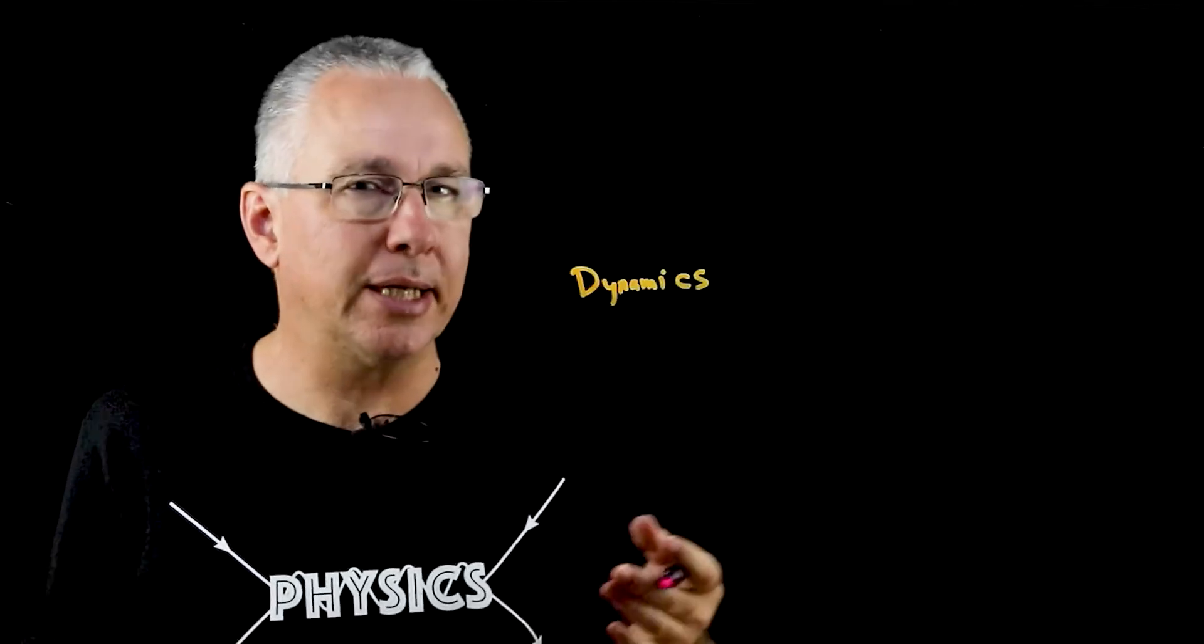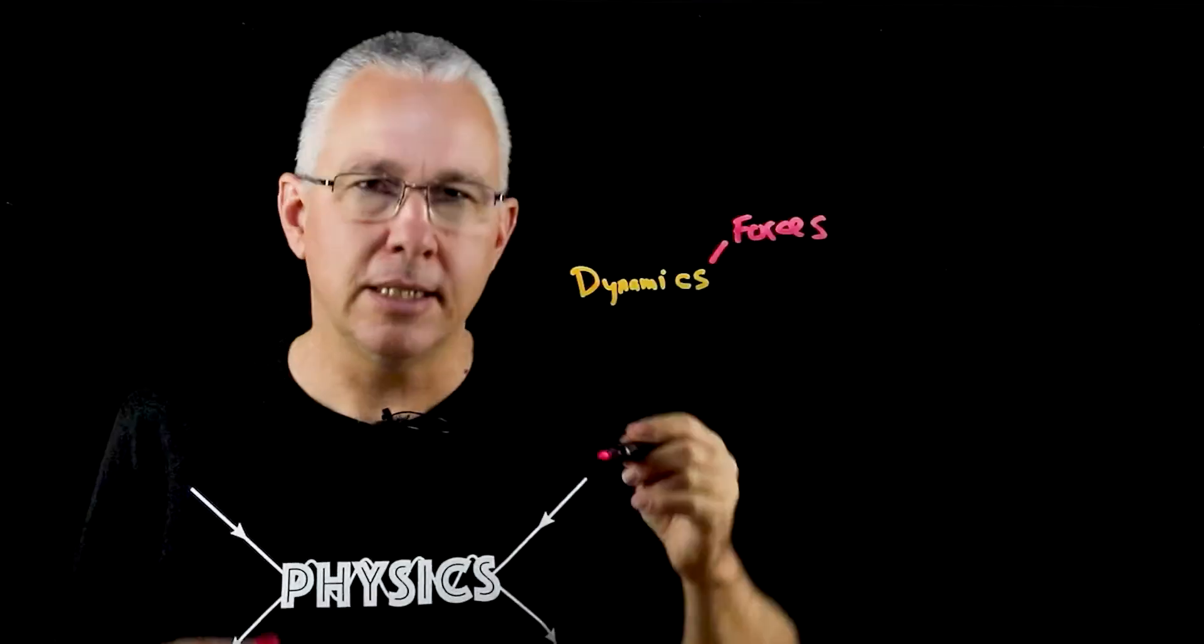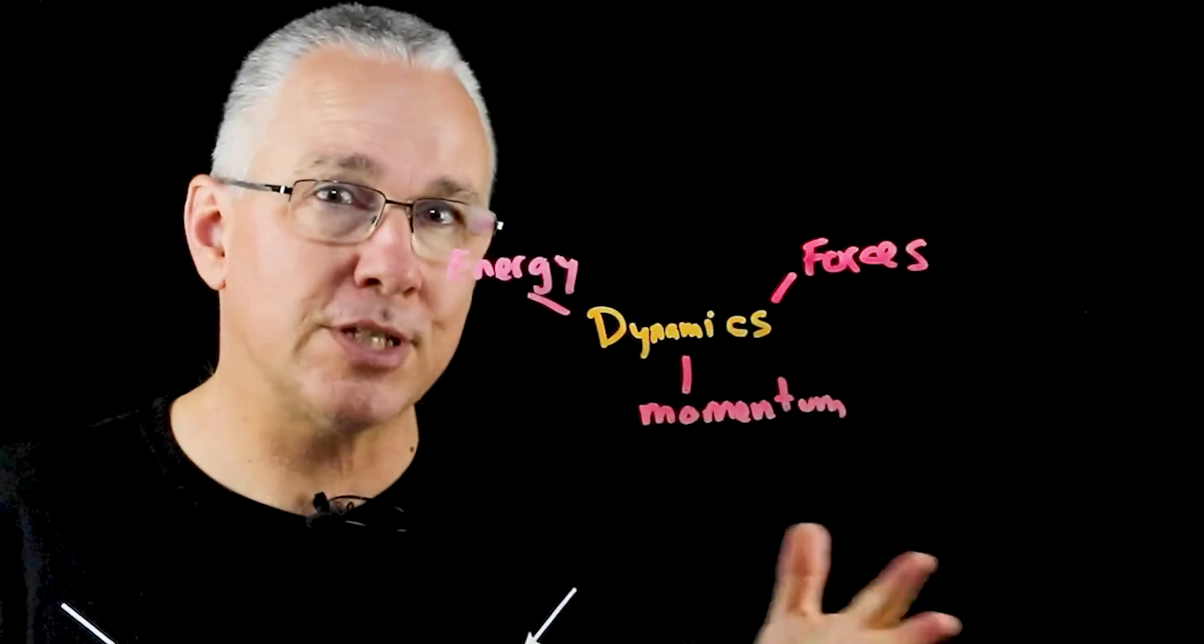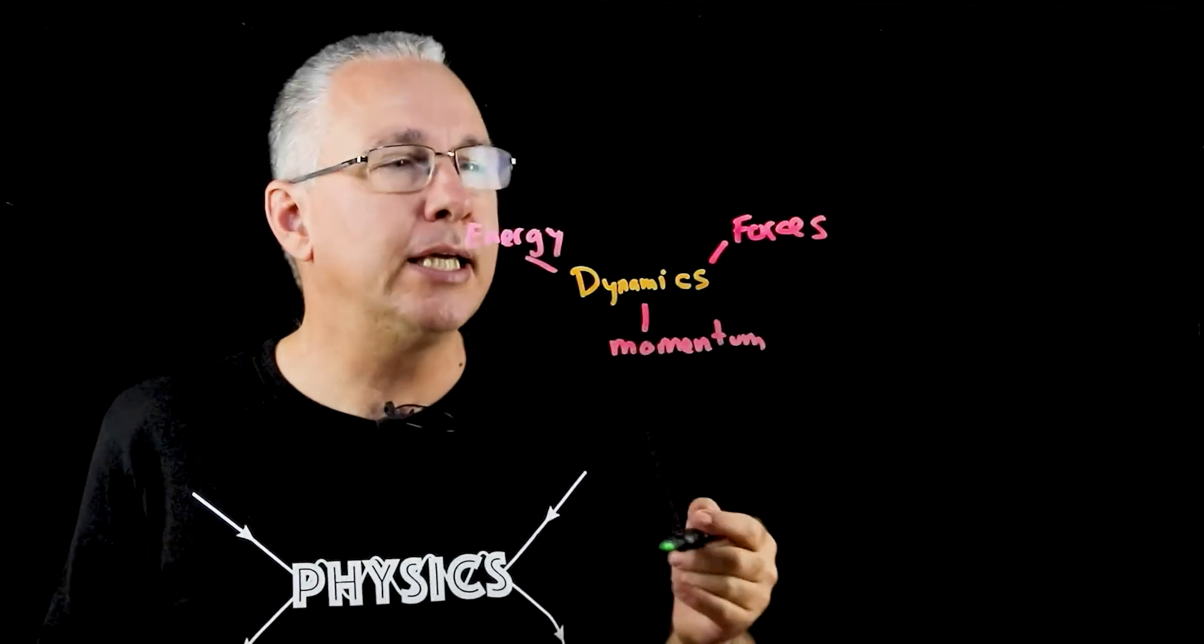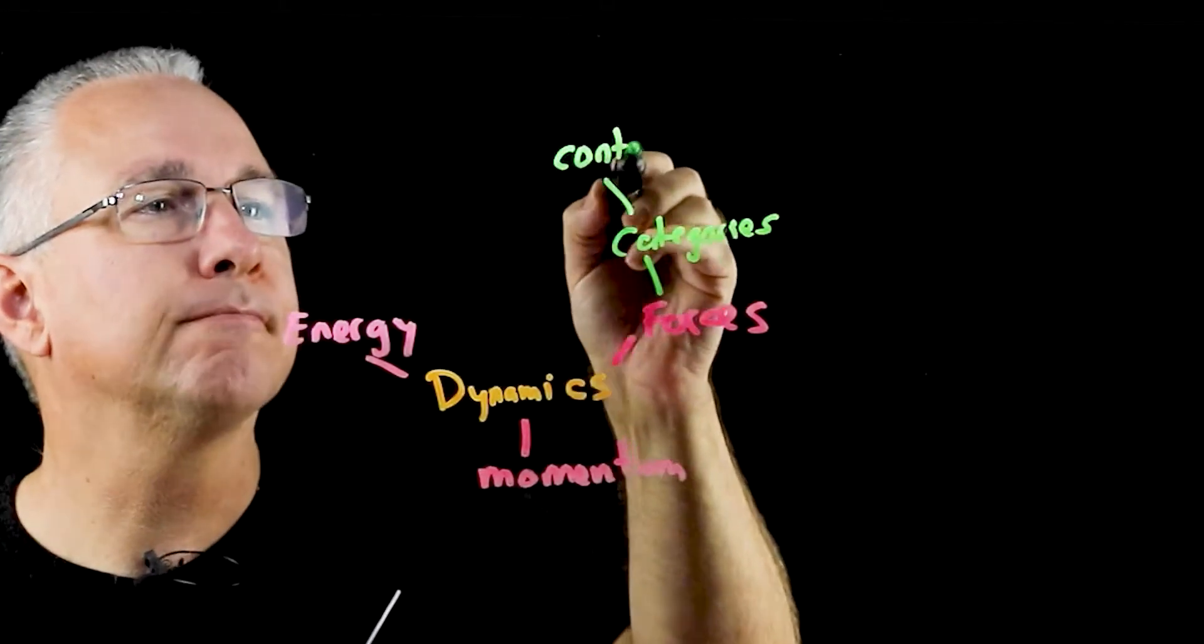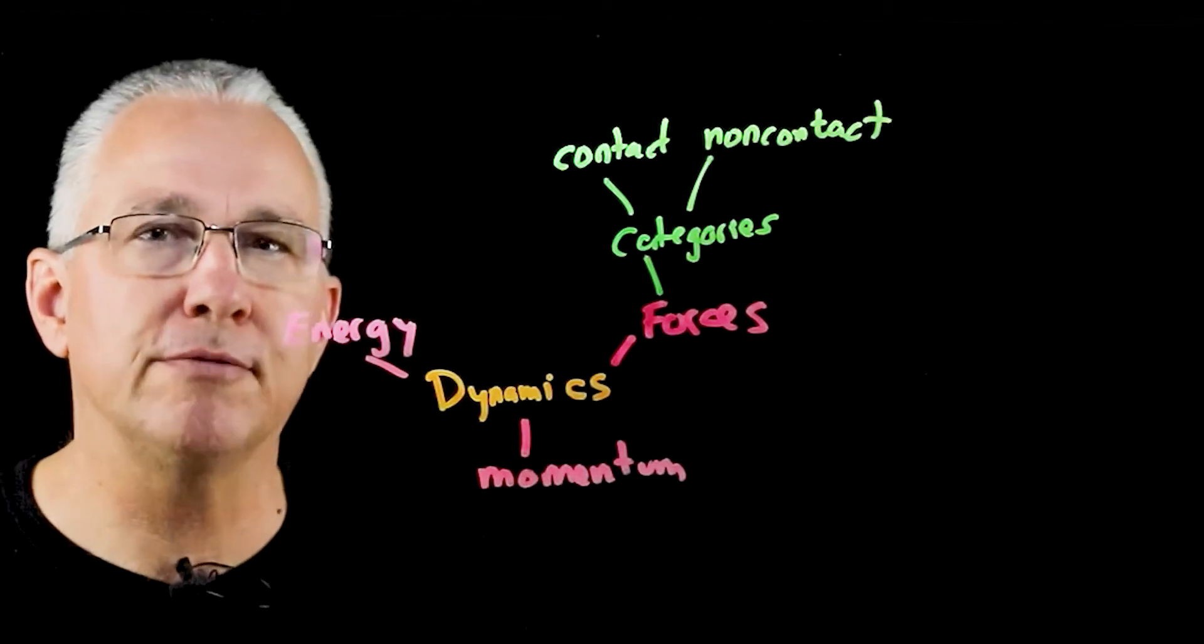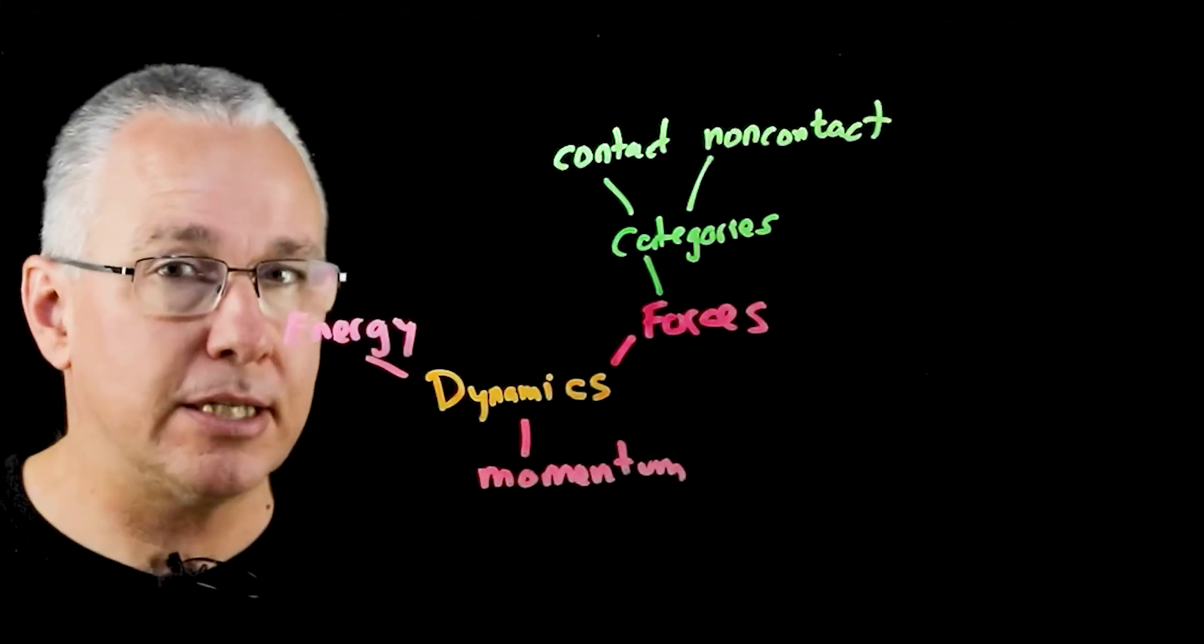Now dynamics can be really broken down into three key areas. The first we're going to look at is forces. The second area we're going to be looking at is the concept of momentum, and lastly we're going to look at the concept of energy. So let's first elaborate what I mean by forces. Now first of all, forces generally have been categorized into one of two categories. The first is what we refer to as contact forces and the other non-contact.